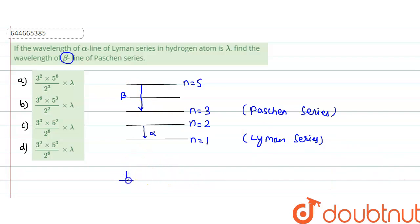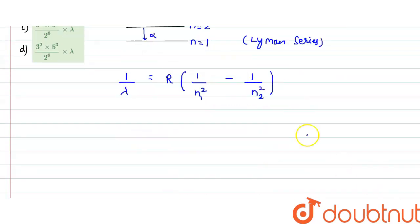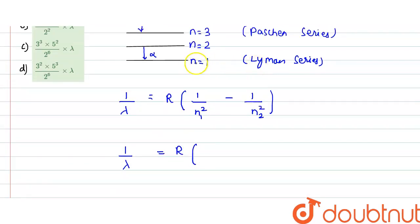The wave number formula is: one divided by lambda equals R times (one divided by n1 squared minus one divided by n2 squared), where n1 is where the transition ends and n2 is where it starts. For the Lyman series alpha line, wavelength is lambda, n1 equals one, and n2 equals two, giving: 1/lambda = R times (1/1² − 1/2²).